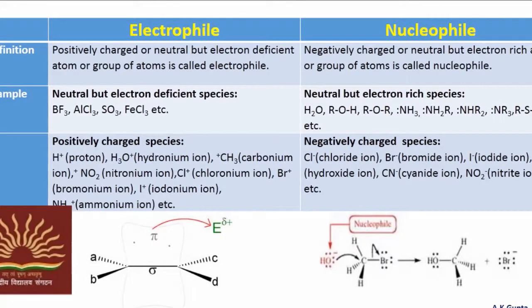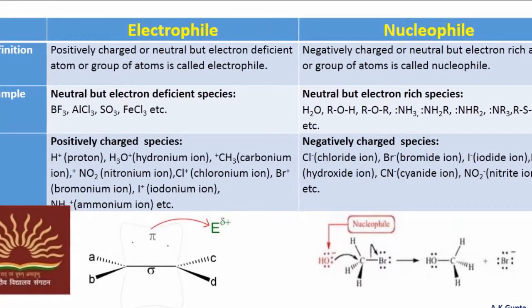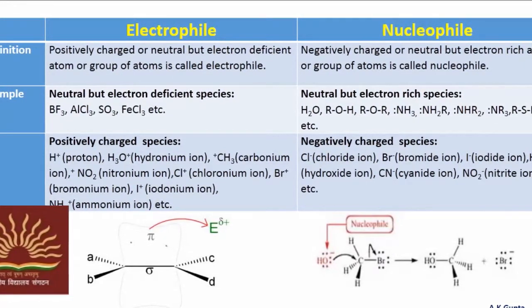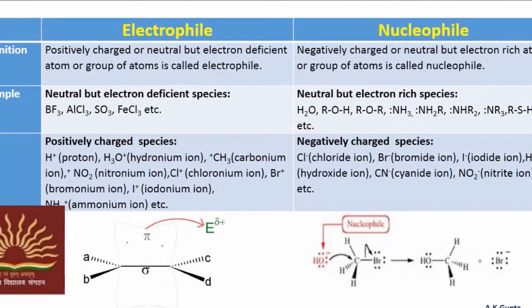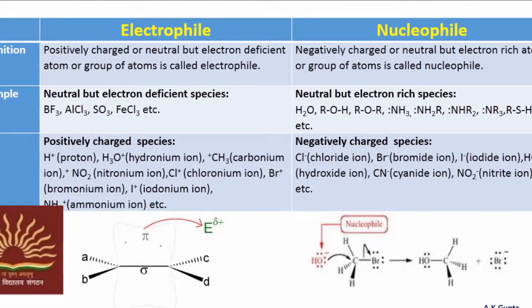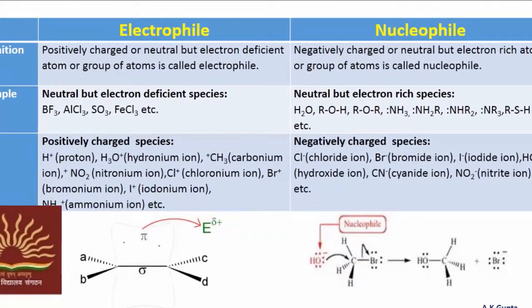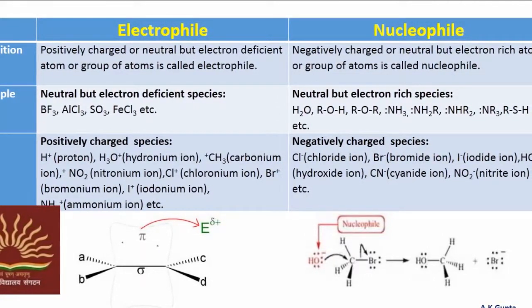Similarly, one group of nucleophiles will be neutral but electron rich species like H2O, alcohol, ether, ammonia, primary amine, secondary amine, tertiary amine, thioalcohol, etc.